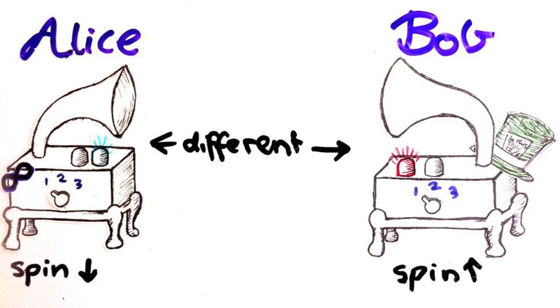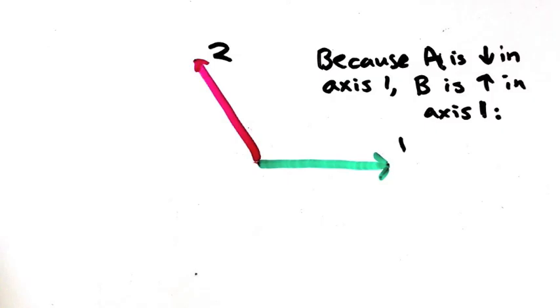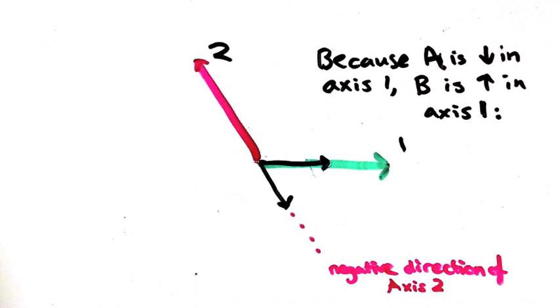What about if Bob measured around axis 2? Because A is down in the first axis, B must be up in the first axis, so we just have to figure out how much of this spin is pointing in the second direction. Actually as you can see, this vector is partially pointing in the negative direction of axis 2.